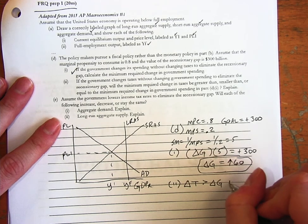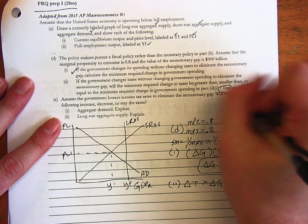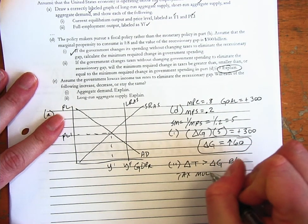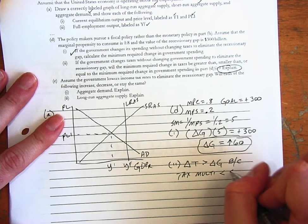Explain. So the simplest answer is the change in taxes is going to have to be bigger than the change in government spending. And the because is just important here, because it does say explain.